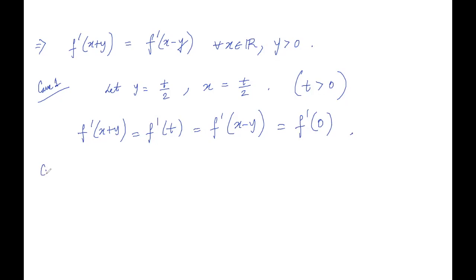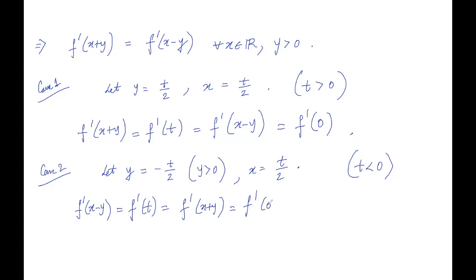Right, again coming to case 2. Now we will take the advantage of x minus y. Okay so let's see how we do that. So let y equals, now in this case we have t is less than 0, so we are taking y to be negative t by 2. So that implies that our y is strictly greater than 0 again, and x equals t by 2. So then f dash x minus y then becomes f dash t, and which equals f dash x plus y which is f dash 0.